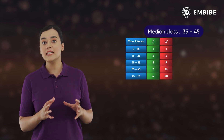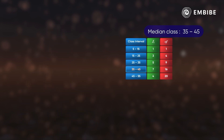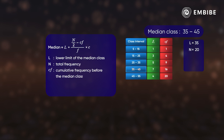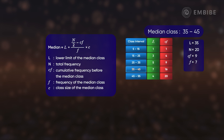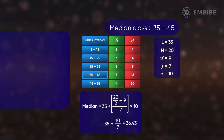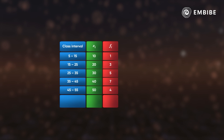The class interval corresponding to cumulative frequency 16 is 35 to 45, so the median class is 35–45. The median of grouped data is calculated as: Median = l + [(n/2 − cf) / f] × c, where l is the lower limit of the median class, n is the total frequency, cf is the cumulative frequency before the median class, f is the frequency of the median class, and c is the class size. So the median = 35 + [(20/2 − 9) / 7] × 10 ≈ 36.43.